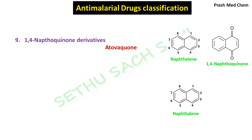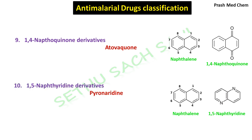Now, again naphthalene. If you replace the carbon atoms at the first and fifth positions of the naphthalene ring with nitrogen atoms, this is called naphthyridine — specifically 1,5-naphthyridine. Pyronaridine is a 1,5-naphthyridine derivative having anti-malarial action.